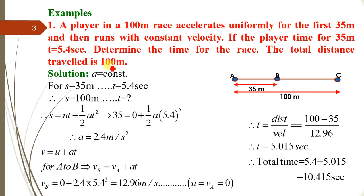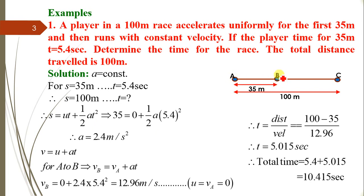The player starts from point A and completes a total race of 100 meters, finally reaching point C. The motion from A to C is divided into two parts: for the first 35 meters (A to B), the player accelerates uniformly, and from B to C the velocity is constant. The time for the first 35 meters is 5.4 seconds and we must find the total time.